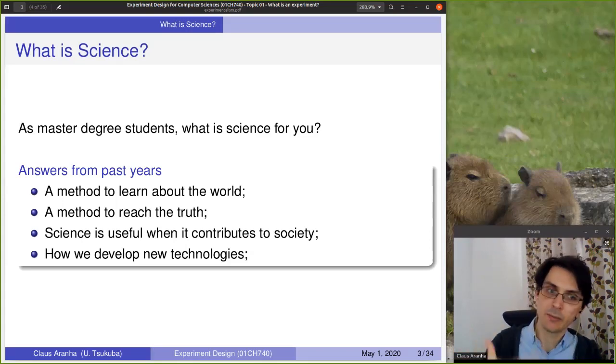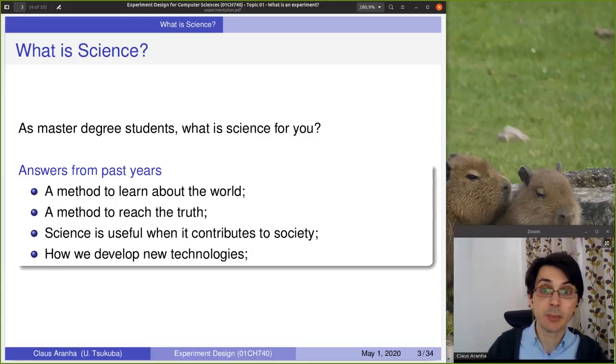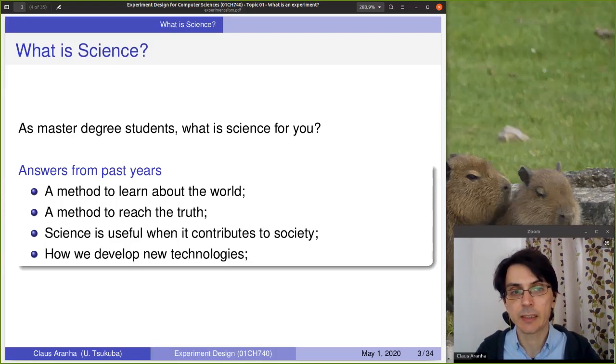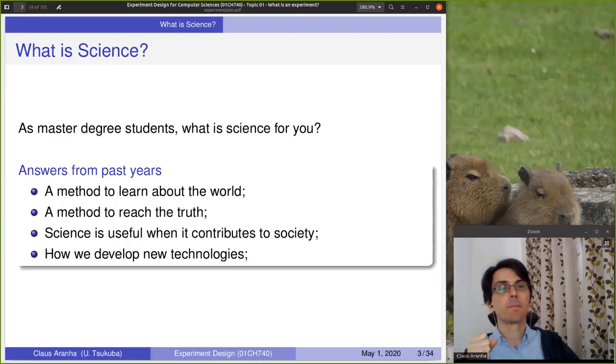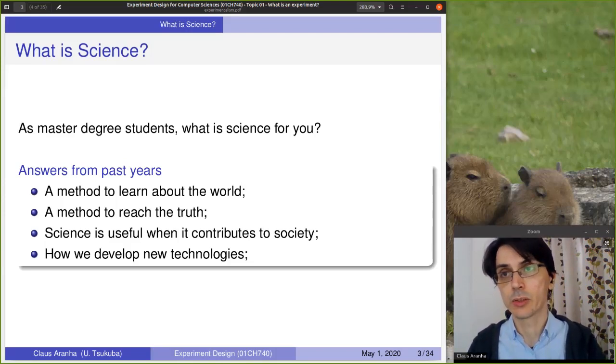Other people take a step back and say that science is a method to reach the truth, which is an interesting take. I think definitely we can learn a lot about what is truth and what is not truth by using scientific experiments. But of course, there are many truths that are not directly observable by the scientific method. For instance, if I tell you I love chocolate, how do you prove that scientifically? So that shows a little bit of the limitations of what we can do and what we cannot do by using the scientific methodologies we are going to discuss in this course.